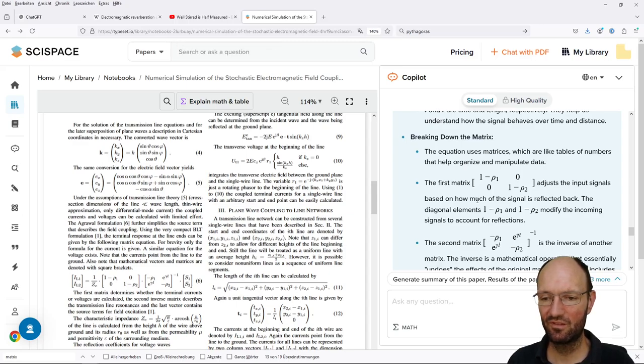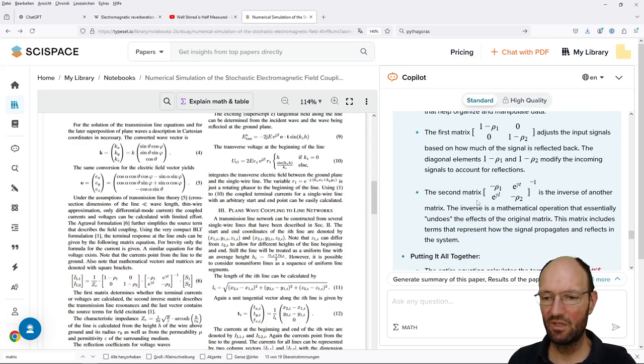Breaking down the matrix: the first matrix adjusts the input signals based on how much of the signal is reflected back. The second matrix is the inverse of another matrix that essentially includes the effect of the original signals propagate and reflect in a system.